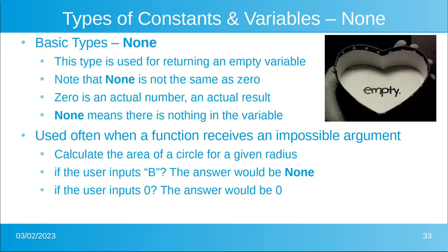Let's start with the types of constants and variables. The first type is None. This is used to return an empty variable. None is not the same thing as zero. Zero is an actual number — it's an actual result. If I were to calculate the area of a circle given the radius and you gave me a radius of zero, well then the answer is zero. The sign of zero is zero. Zero is an actual number. None is when there is no answer. If you wanted the sign of 'tramp,' well that's not a thing, so I can't give you an answer — I give you None. Don't confuse None with zero. Very, very different.